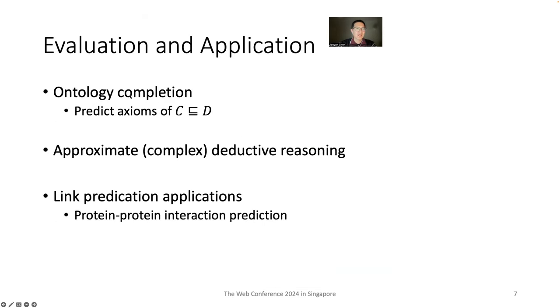The box embedding method is evaluated on ontology completion, approximate deductive reasoning, and link prediction applications such as protein-protein interaction prediction.